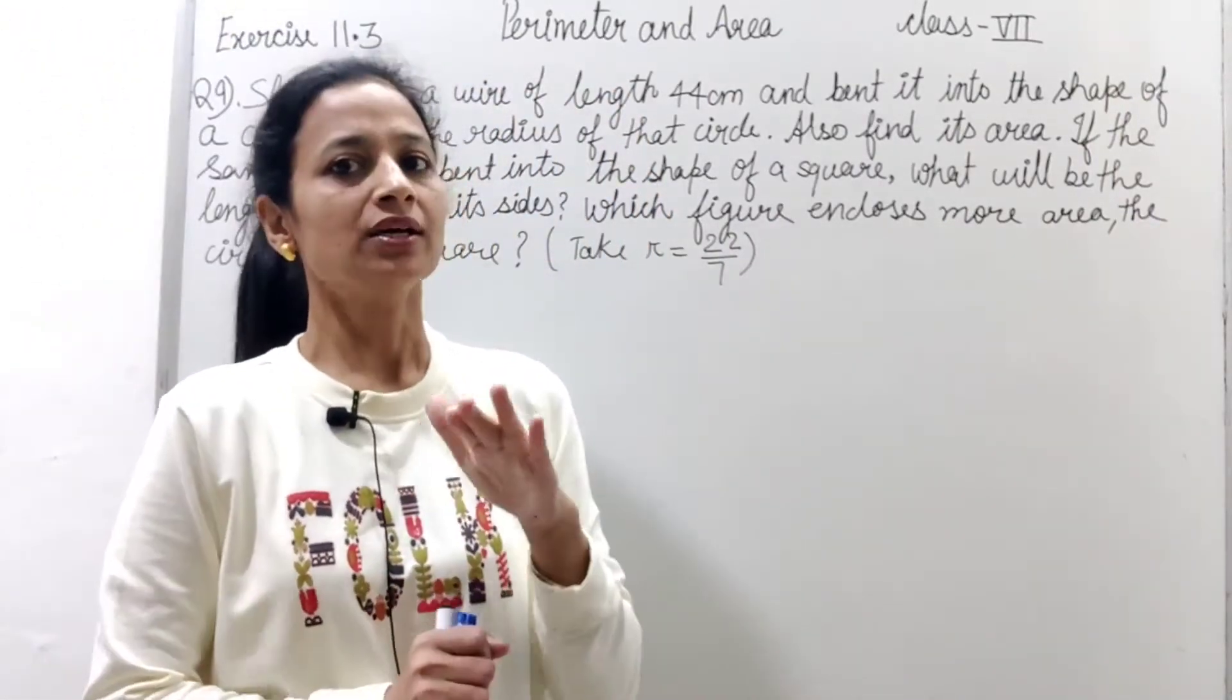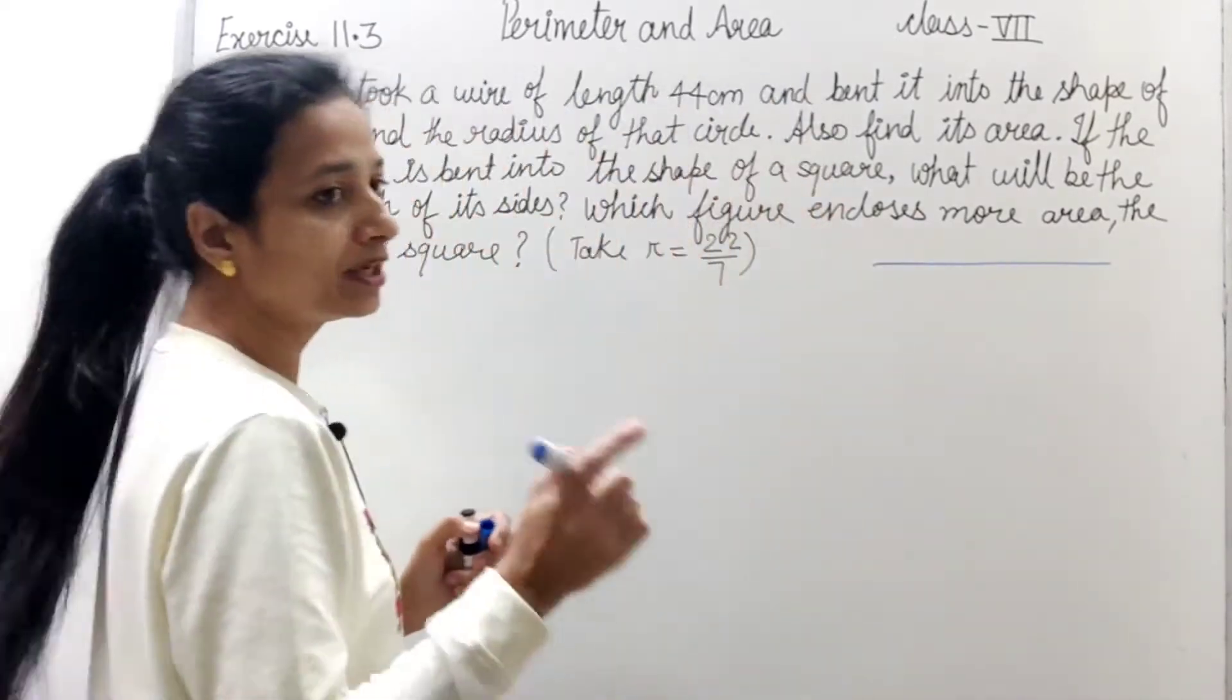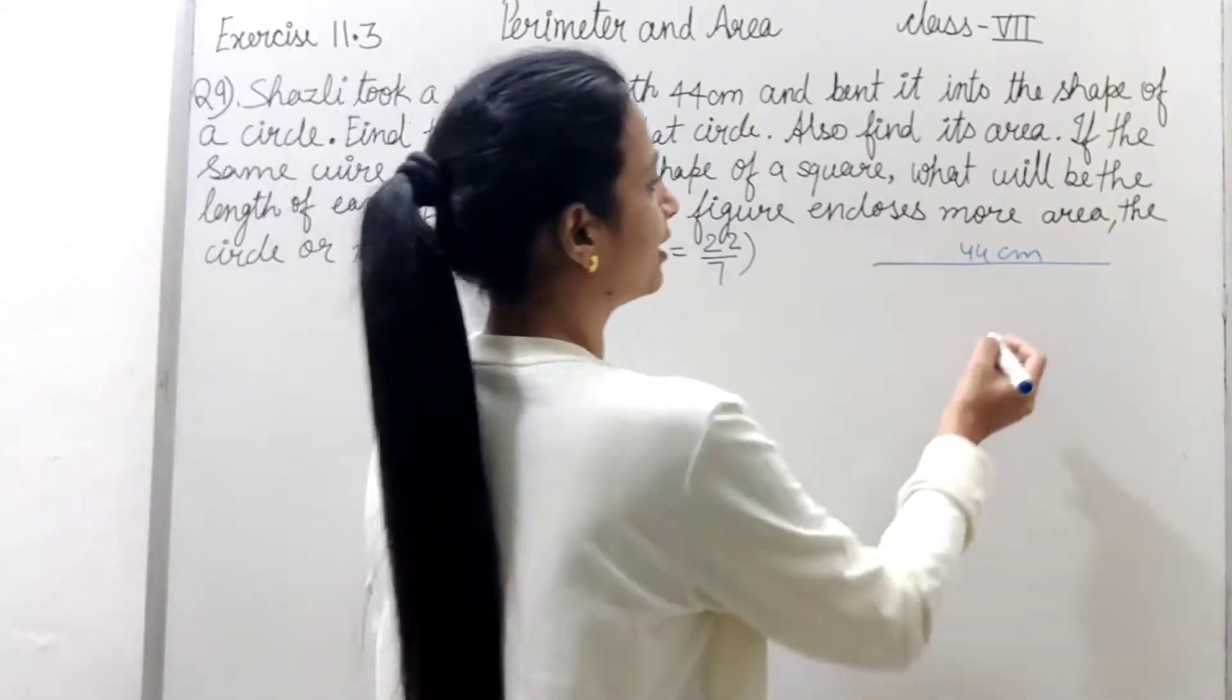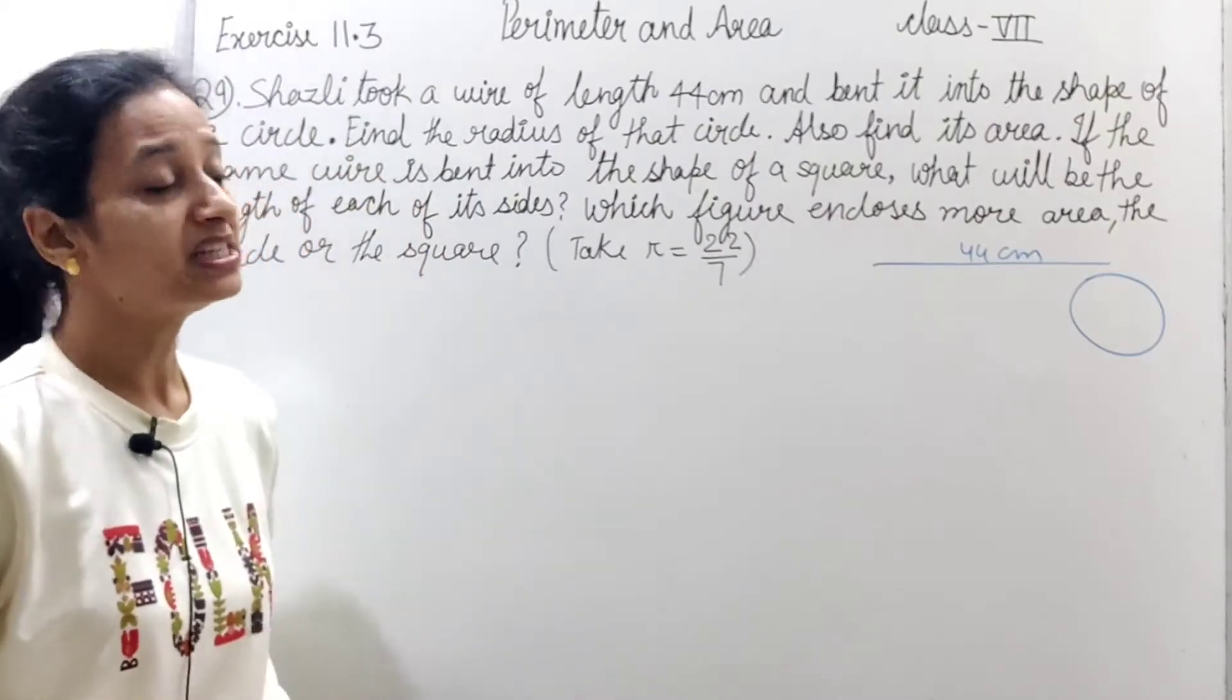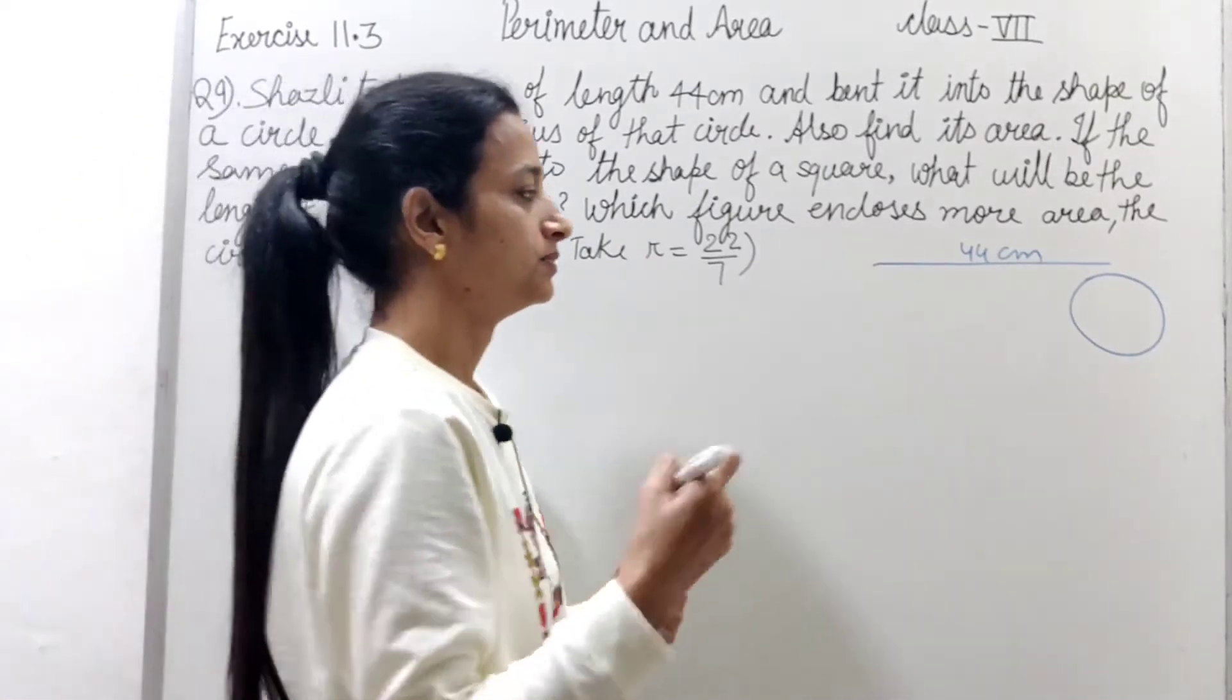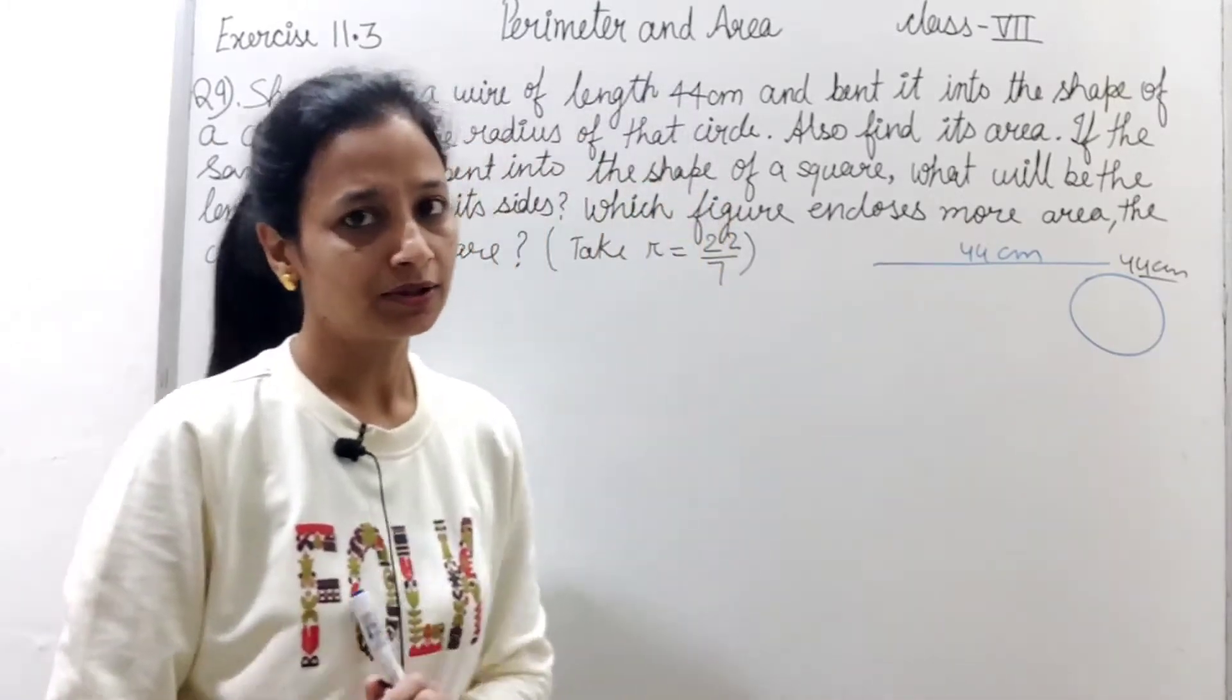Pahle question samajte hai. Question mein kya keh raha hai? Ki ek wire hai jiski length given hai, 44 cm. Ab isko bent karke ek circle bana diya gaya. Ab jab isi same wire ko bent karke ye circle banaya gaya hai, to definitely circle ki circumference kitni ho gayi?